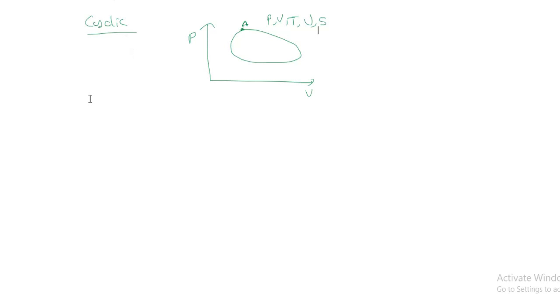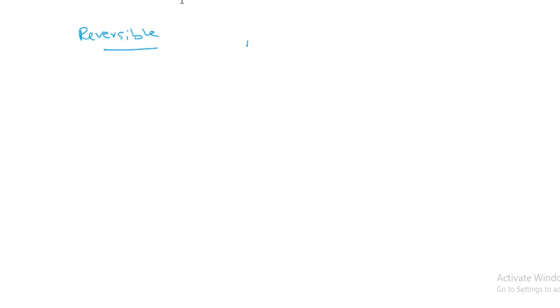Another important type is the reversible process. Consider a process where the system goes from A to B in the forward direction. By varying conditions, we can make the process proceed in the reverse direction also, from B back to A. If all the changes that occurred in the forward direction are exactly reversed in the reverse process, it is called a reversible process.